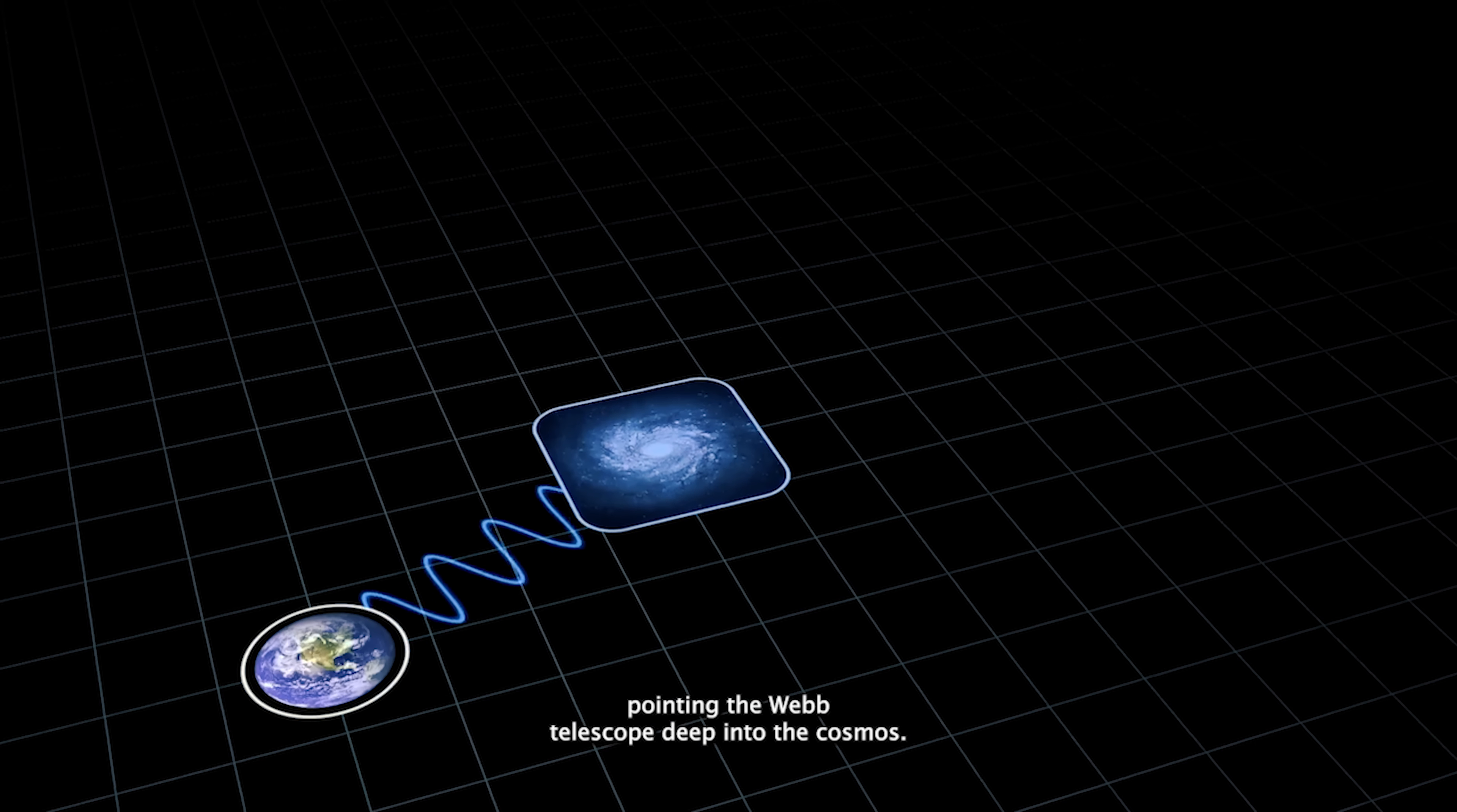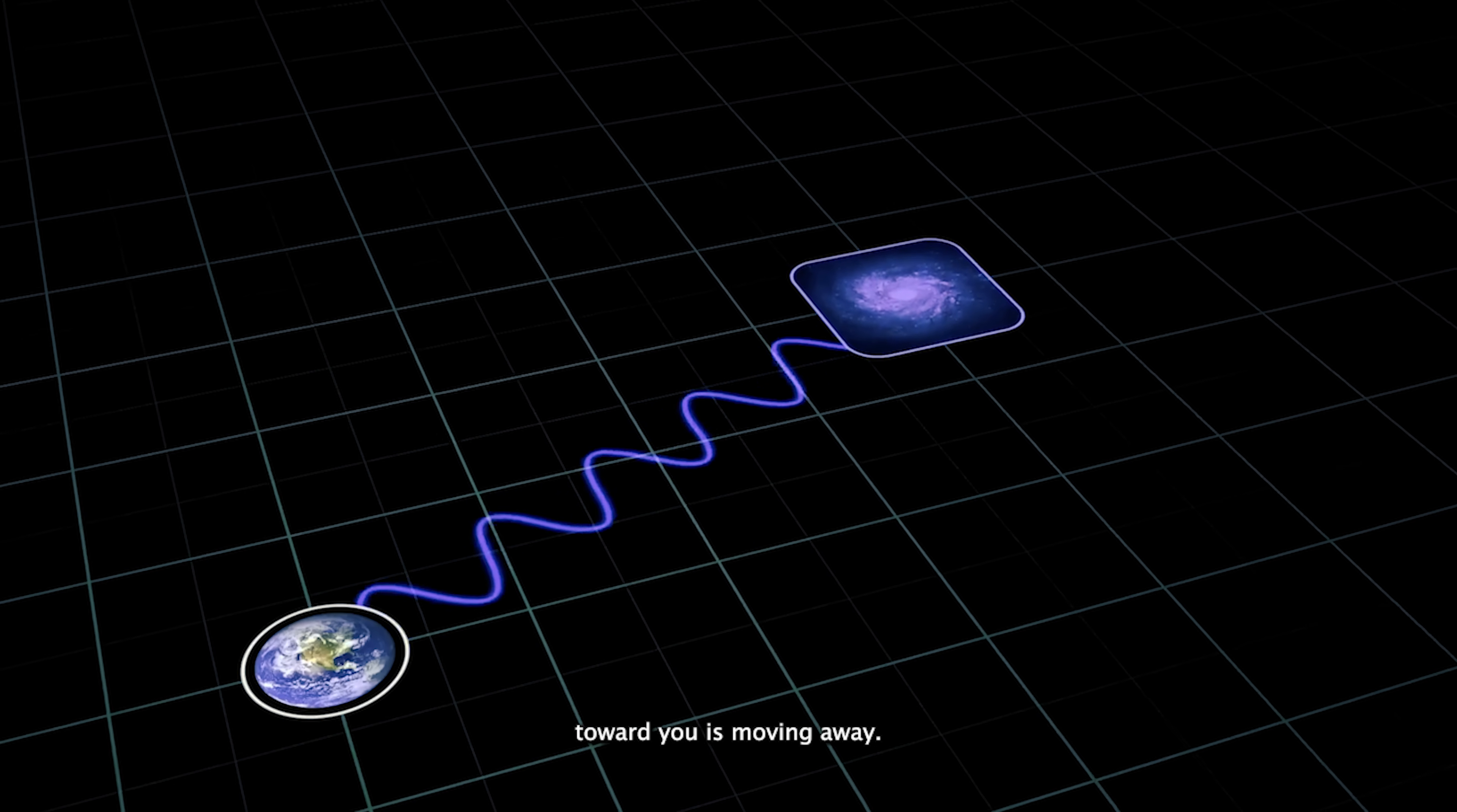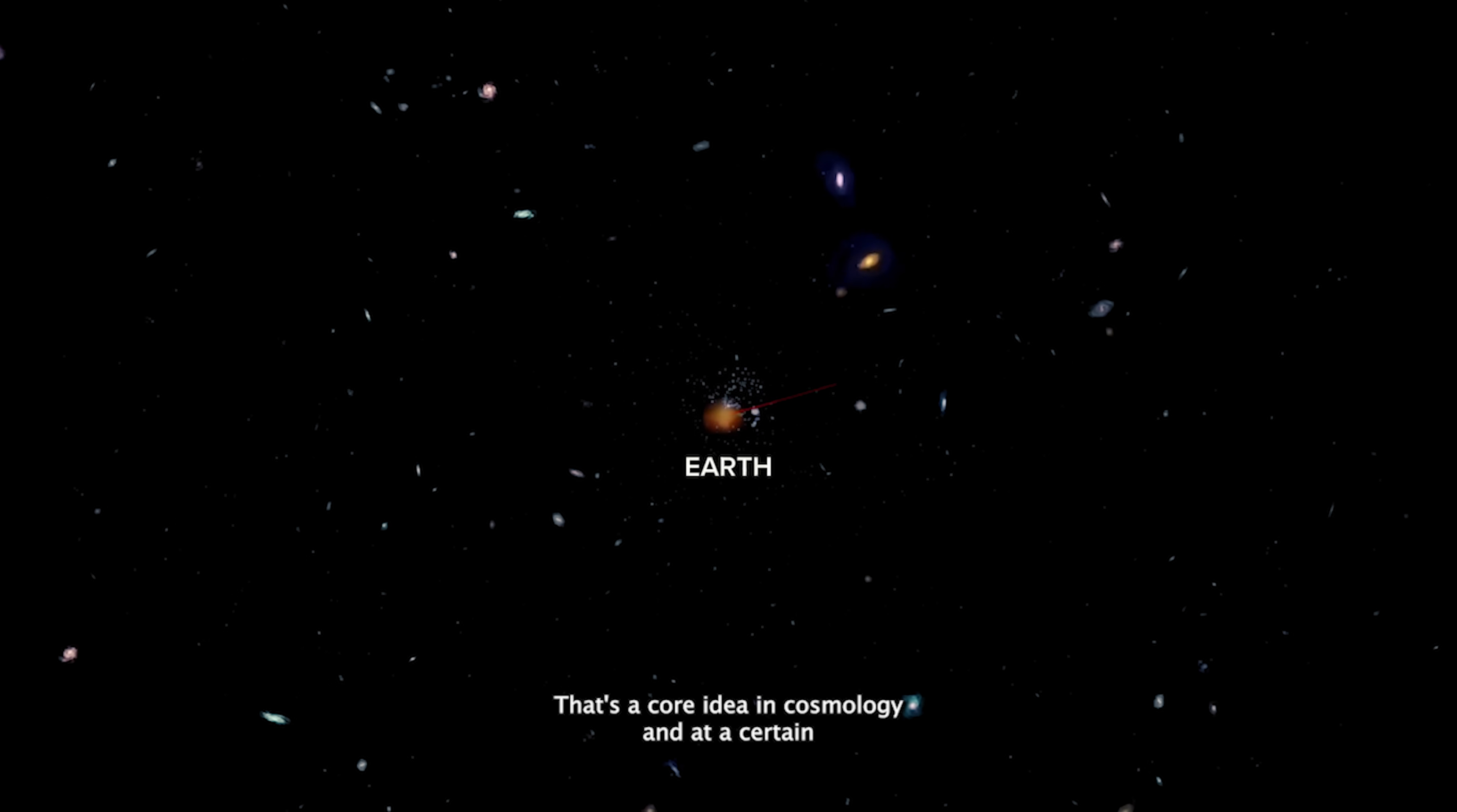Imagine standing on Earth, pointing the Webb Telescope deep into the cosmos. Everything you see, all the ancient light coming toward you is moving away. The farther a galaxy is from us, the faster it's racing away. That's a core idea in cosmology.